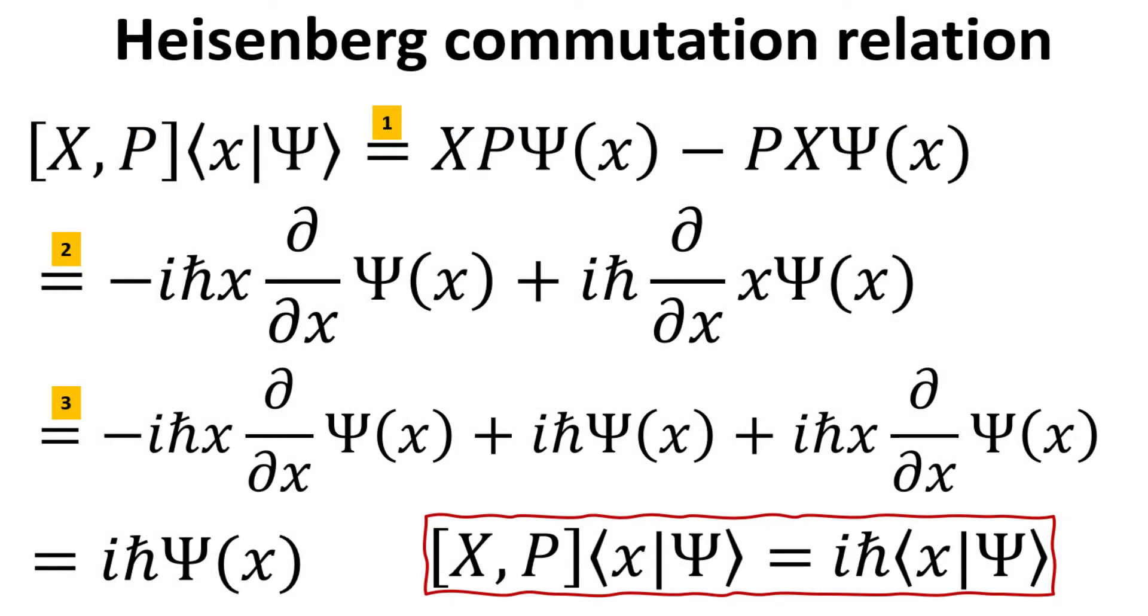Let's take the commutator of x and p and act it on the wave function ψ in the position representation. First, we write down the definition of the commutator as in step 1. In step 2, we express the momentum operator in the position representation.